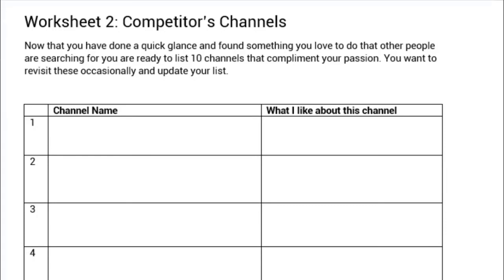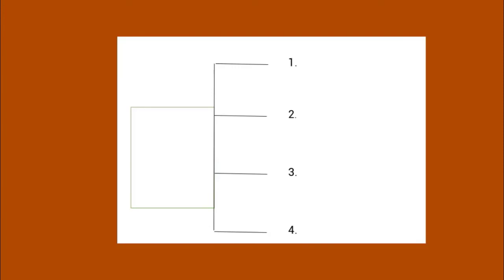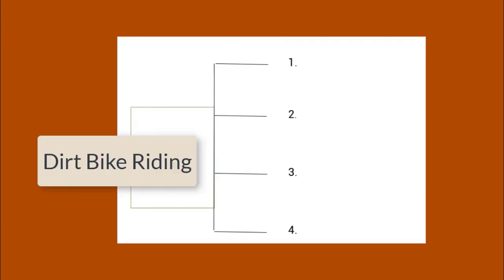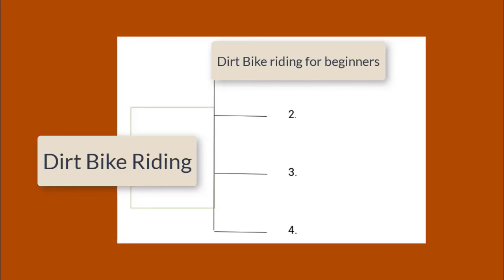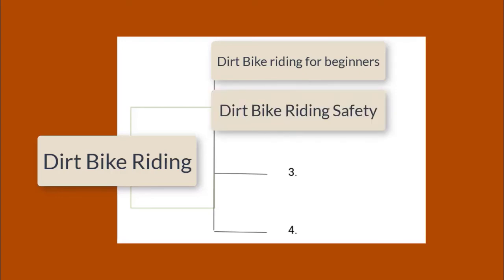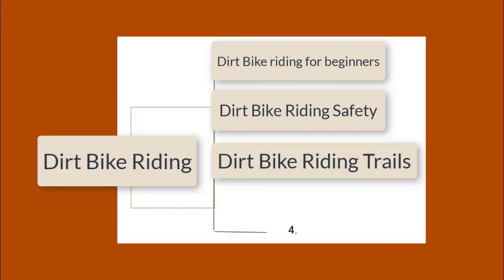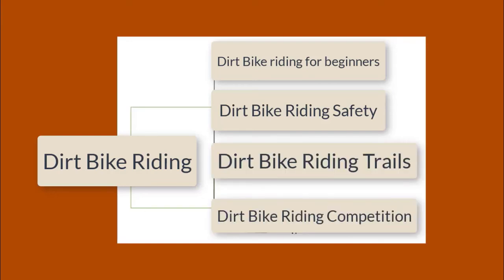This next step — before we figure out what kind of content we're going to make — is to make pillars. That's what I call them, pillars, to go with your topic. My topic is dirt bike riding, and four things I want to talk about are: dirt bike riding for beginners, dirt bike riding safety, dirt bike riding trails, and dirt bike riding competition. Now, I don't ride dirt bikes — I went through different channels and those are four different pillars I came up with. What I mean by pillars is: what are four different sub-topics I can talk about as I talk about dirt bikes?